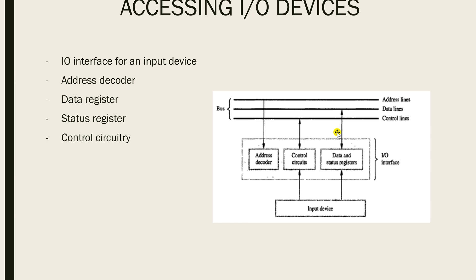Looking at the hardware components: there is an address decoder that enables the device to recognize its address when that address appears on the address lines. There is also a data register that holds the data being transferred from the processor, and a status register that contains information relevant to the operation of the I/O device. Both the data and status registers are connected to the data bus and are assigned unique addresses. Together with the control circuitry, they form the I/O interface for an input device.